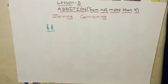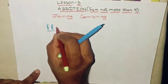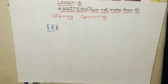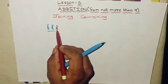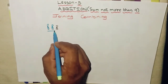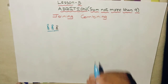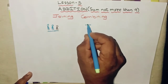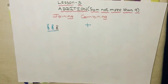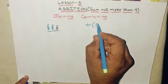Yes, one more chocolate was given by your mother. Again you're going to combine all of them. How many do you have now? One, two, three — yes, so three! Like this, joining is called addition. Addition is represented using a symbol called plus. This is called plus.